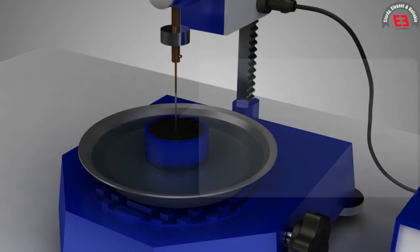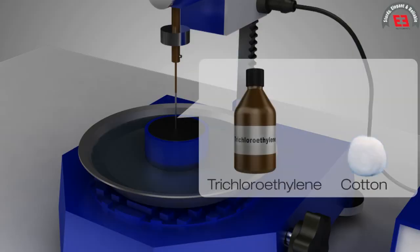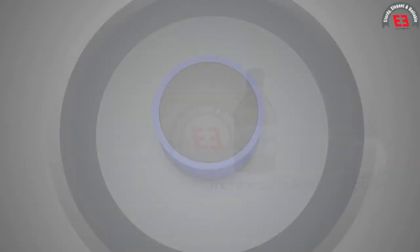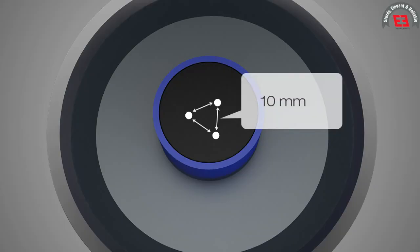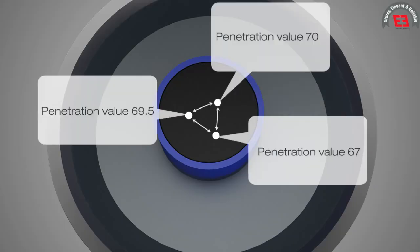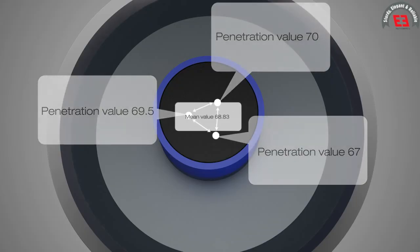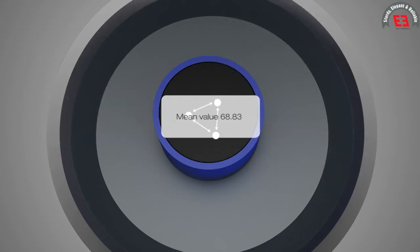After each test, the needle is cleaned with trichloroethylene and dried. At least three such measurements are made on this sample at testing distance of not less than 10 mm apart. The mean value of three consistent penetration measurements is reported as the penetration value.